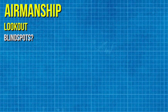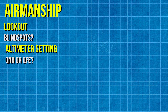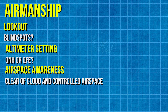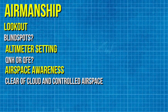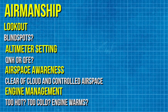On today's airmanship brief, we have lookout to worry about. The aircraft has blind spots just like your car, and your instructor will point them out to you. Your altimeter setting — is your altimeter set up to display the height above the airfield, known as QFE, or the altitude above mean sea level, also known as QNH? Airspace and cloud awareness: we do not want to be climbing or descending into cloud or into controlled airspace. And finally, engine management: is our engine too hot or too cold, and what action do we need to take to keep the engine at the required temperature? For example, do we need to warm the engine?